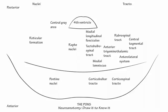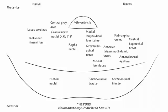Now label the locus coeruleus. It lies in the lateral floor of the fourth ventricle and releases noradrenaline. Next, label the presence of the cranial nerve 5, 6, 7, and 8 nuclei in the dorsal pontine tegmentum.